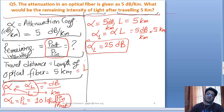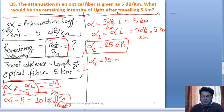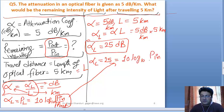But this is not asked from us. What is asked is P_out by P_in. So we are going to write the formula of alpha L again. Alpha L, which is 25 dB, is also given as 10 log base 10 of P_in by P_out.